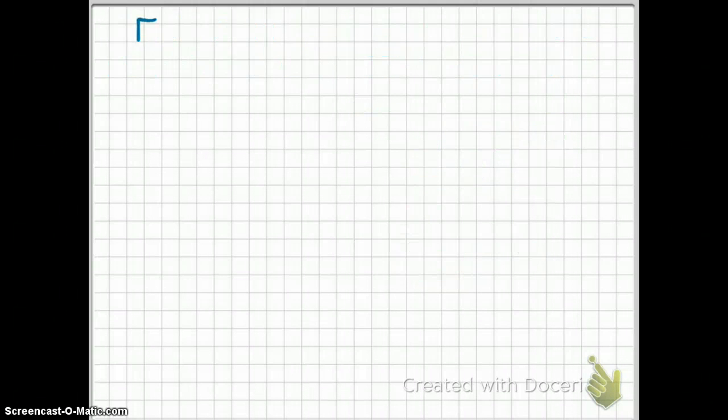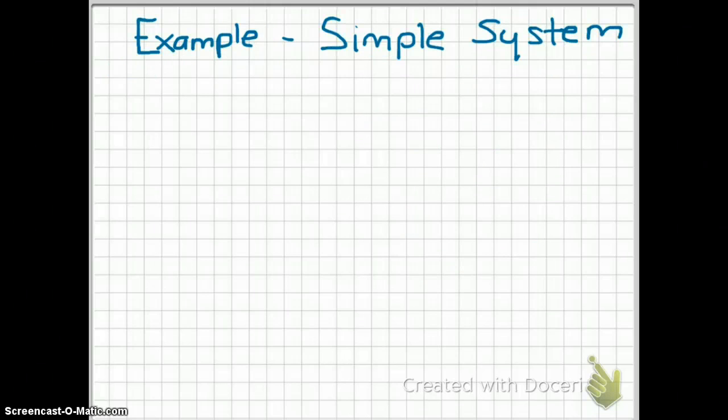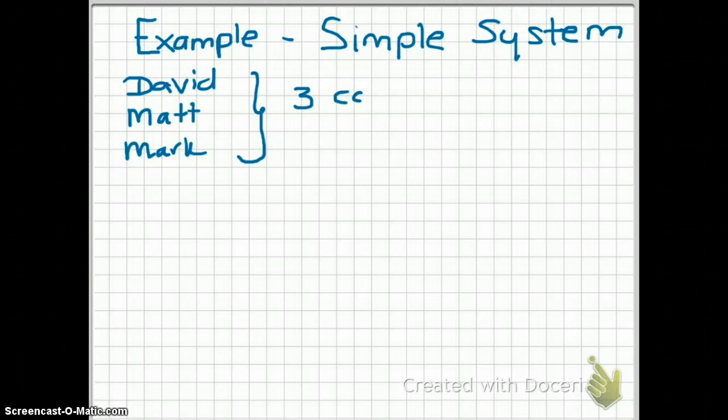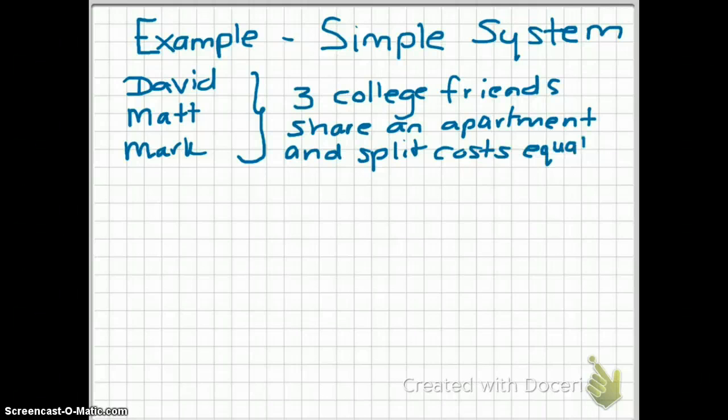We're going to take a look at an example of a simple system. In this example, we have three people: David, Matt, and Mark. They are three college roommates sharing an apartment together and they agree to split up their costs equally.